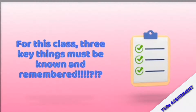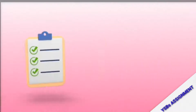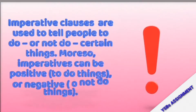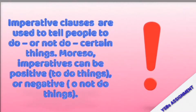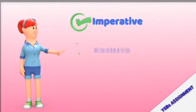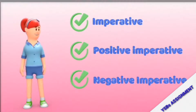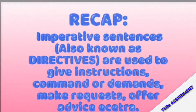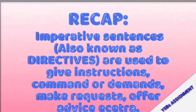For this class, three key things must be known and remembered. Number one: imperative. What's an imperative? Imperative clauses are used to tell people to do or not to do certain things. When I tell you to sit down or to hand me something, I am using the imperative clause. We have two types: positive imperative and negative imperative. Imperative sentences are also known as directives — they give commands, demands, requests, or advice. Positive imperative means to do something; negative imperative means not to do something.